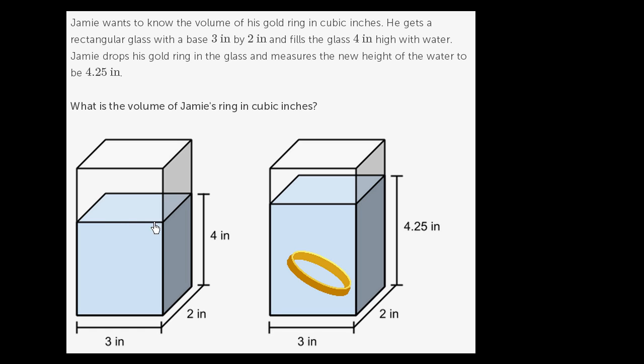Well, when you start with this water and you add his ring, whatever that volume is, it's going to displace an equal volume of water and push it up. So the incremental volume that you now have is essentially going to be the volume of his ring.